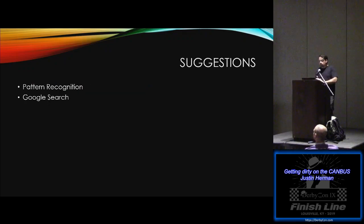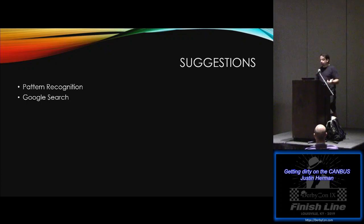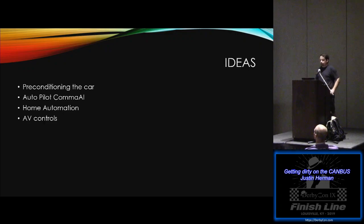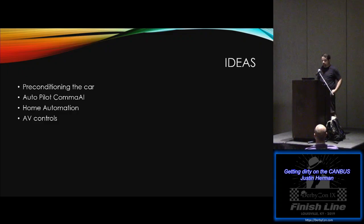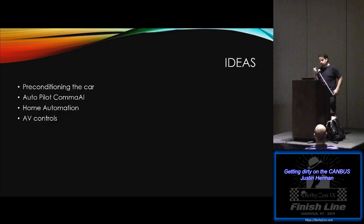Some suggestions if you're looking to do this: look for pattern recognitions, and I recommend Google searching for similar makes, models, and brands — that's a strong way to find more information. Some ideas if you're looking to get into it yourself would be pre-conditioning your car, or autopilot with comma.ai, home automation — so when your car gets home, because it has a GPS, you can receive that and trigger automations inside your home. And AV controls: I have my phone set up so when I connect via the audio jack instead of Bluetooth, I can still use the thumb pads and directional keys on the wheel to control the phone.